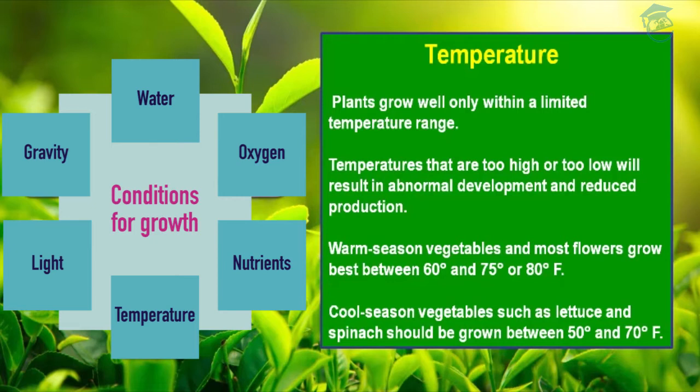Temperature also affects soil organisms. Nitrifying bacteria are inhibited by low temperatures, and soil pH may decrease in summer due to the activities of microorganisms. So, plants grow well only within an optimum temperature range, and temperatures that are too high or too low will result in abnormal development or stunted production.